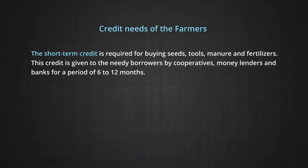Short-term credit is required for buying seeds, tools, manure, and fertilizers. This credit is given to the needy borrowers by cooperatives, money lenders, and banks for a period of 6 to 12 months.